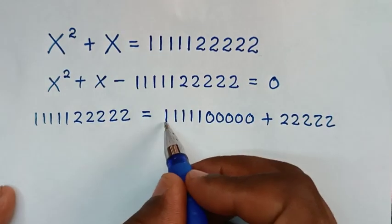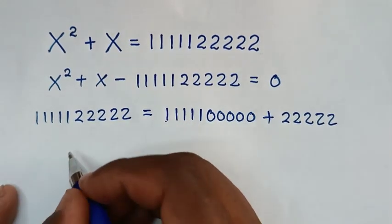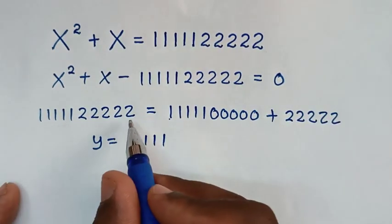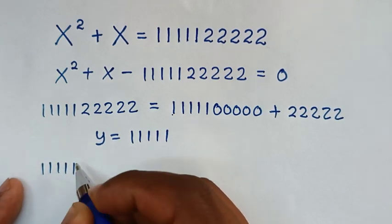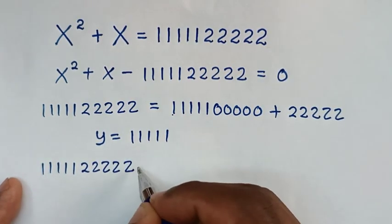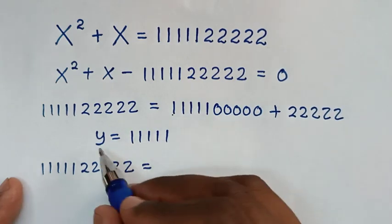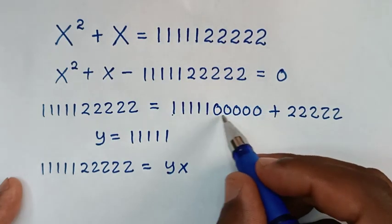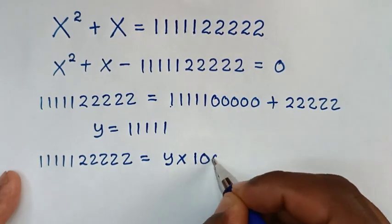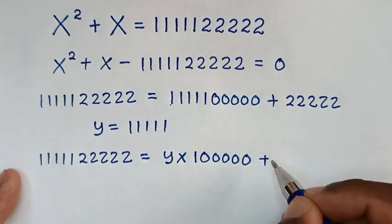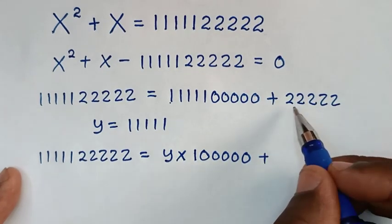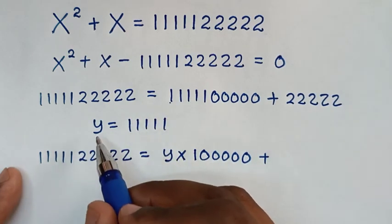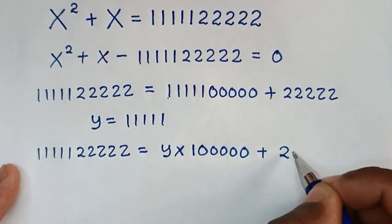Then in the next step, we let y equal to 11,111. So from the number 1,111,122,222, because those ones are y, it will be y times 10^5 — that is y times 100,000 — then plus 22,222. And 22,222 is the same as 11,111 times 2, which is y times 2, so that is 2y.